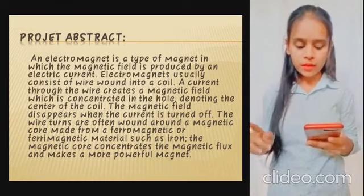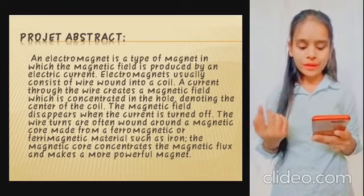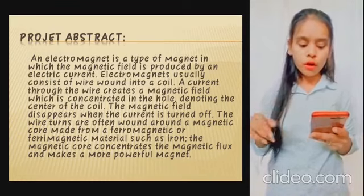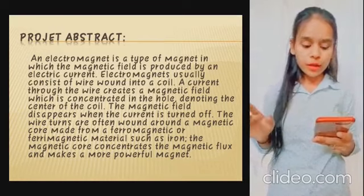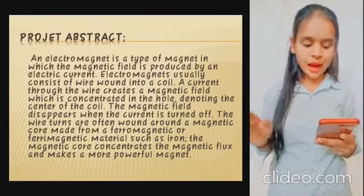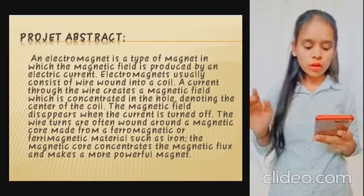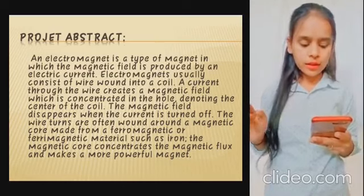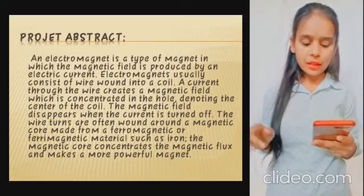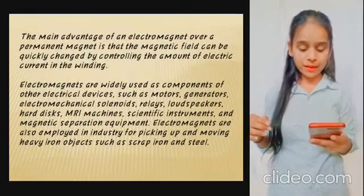The wire turns are often wound around a magnetic core made from ferromagnetic materials such as iron. The magnetic core concentrates the magnetic flux and makes a more powerful magnet.